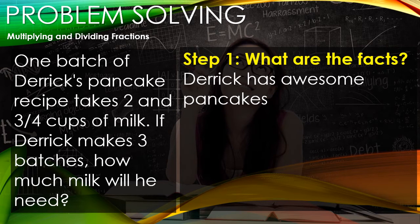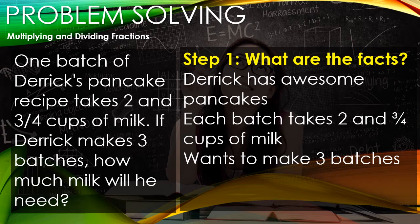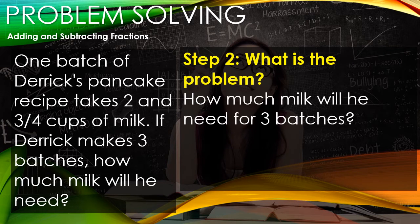Let's list out some facts. First, Derrick has awesome pancakes - anyone making pancakes using real milk, his pancakes are especially delicious. But the math part: each batch takes 2 and 3/4 cups of milk, and Derrick wants to make 3 batches. So what's his problem? He needs to figure out how much milk he needs for 3 batches.